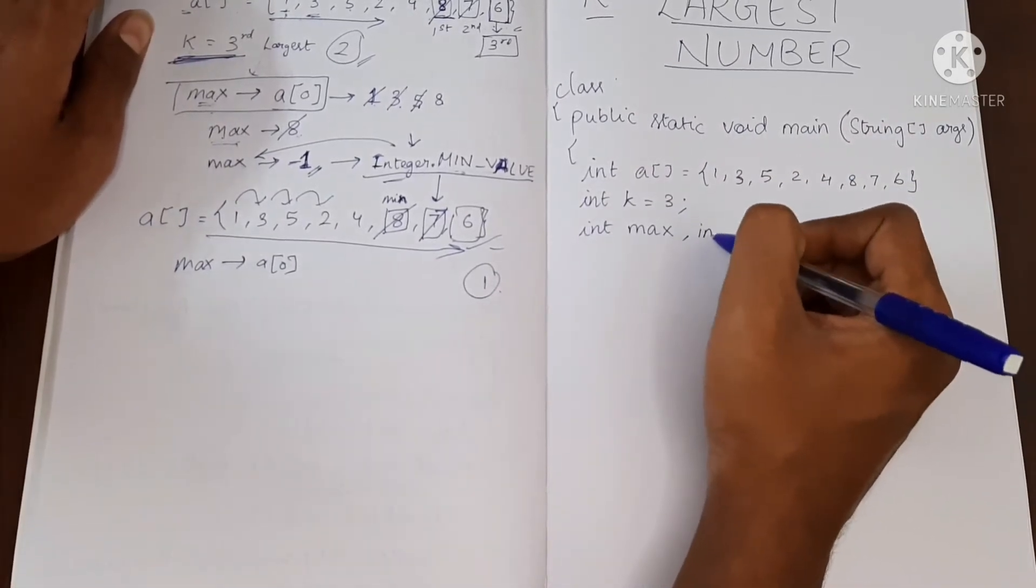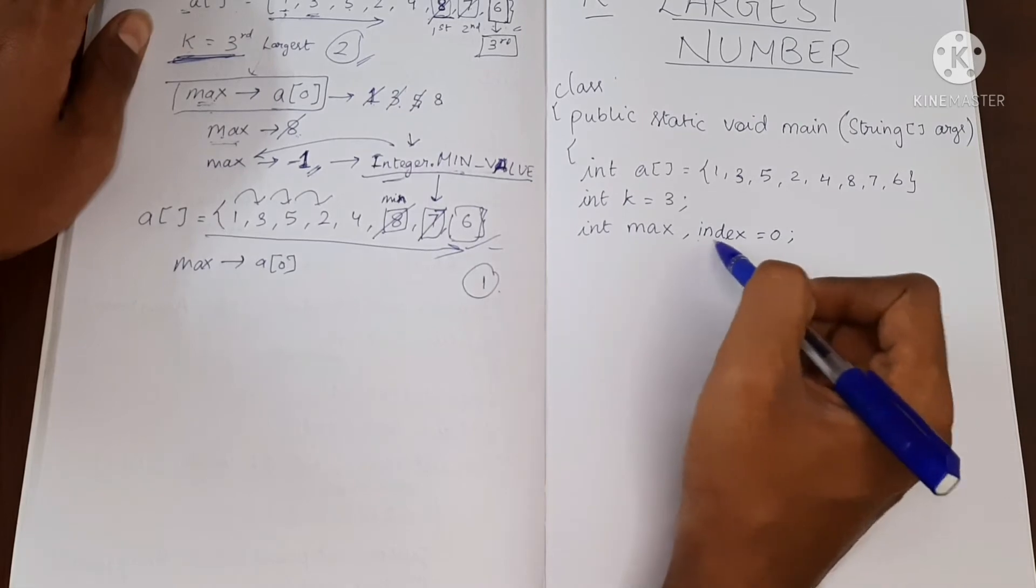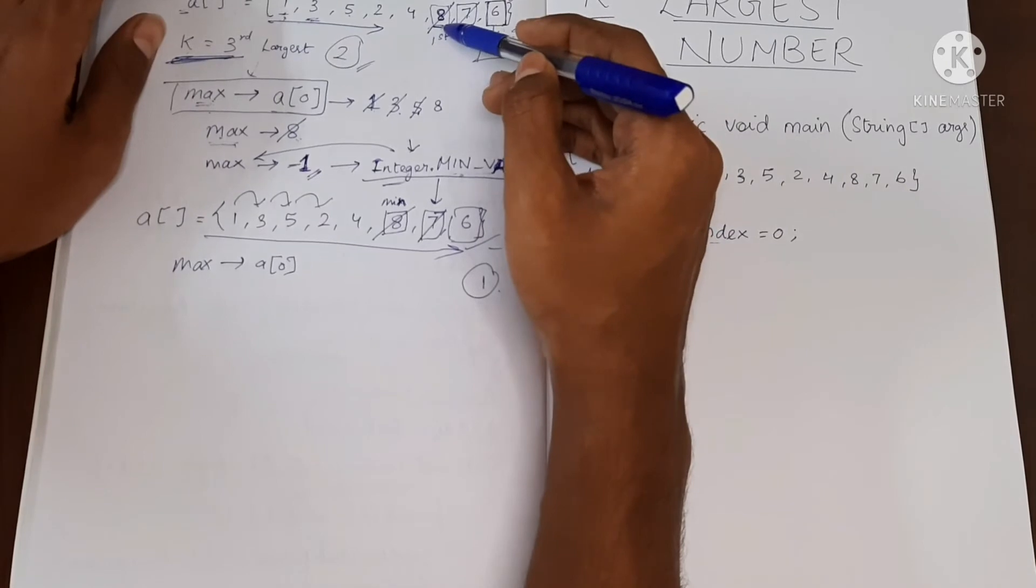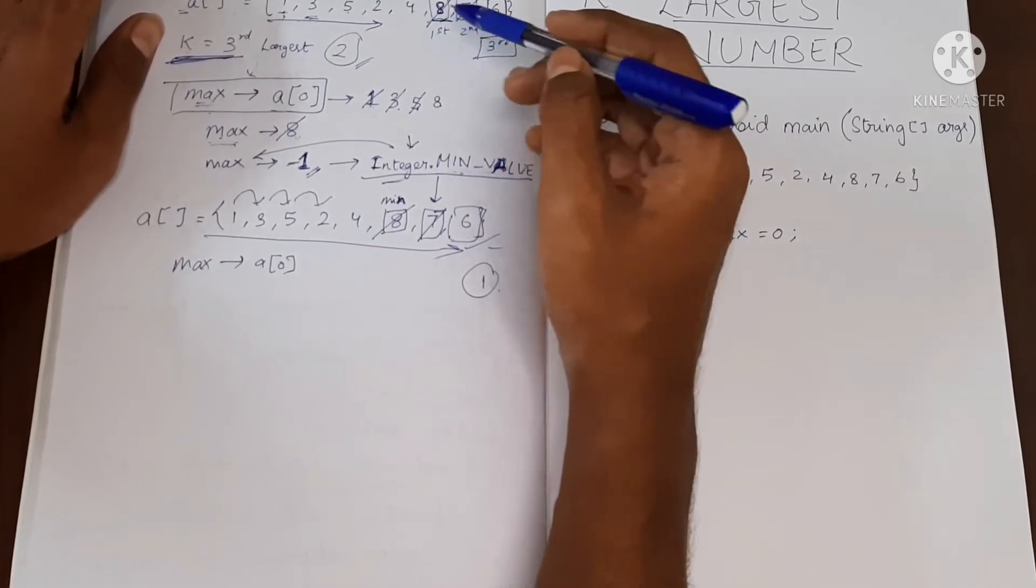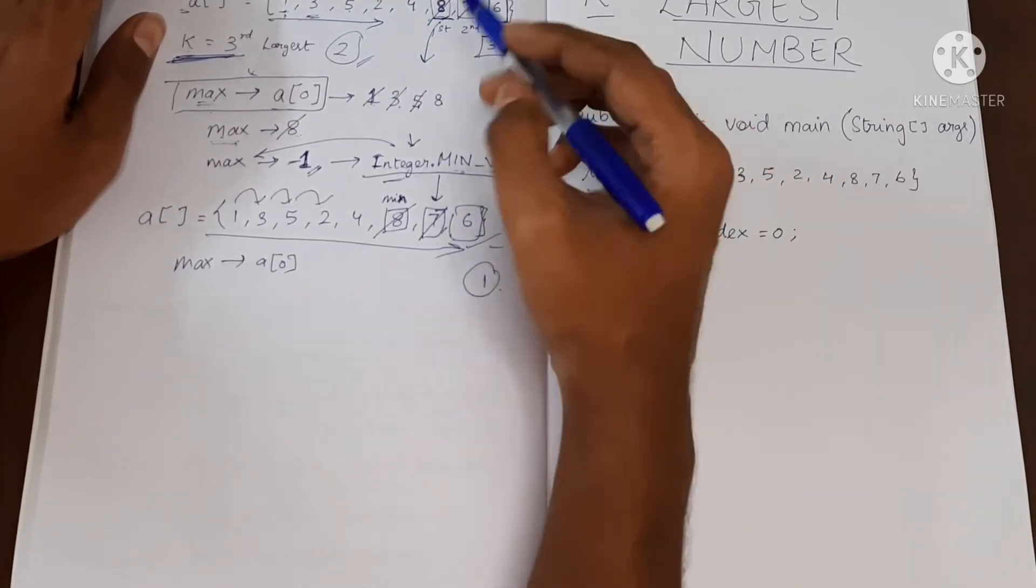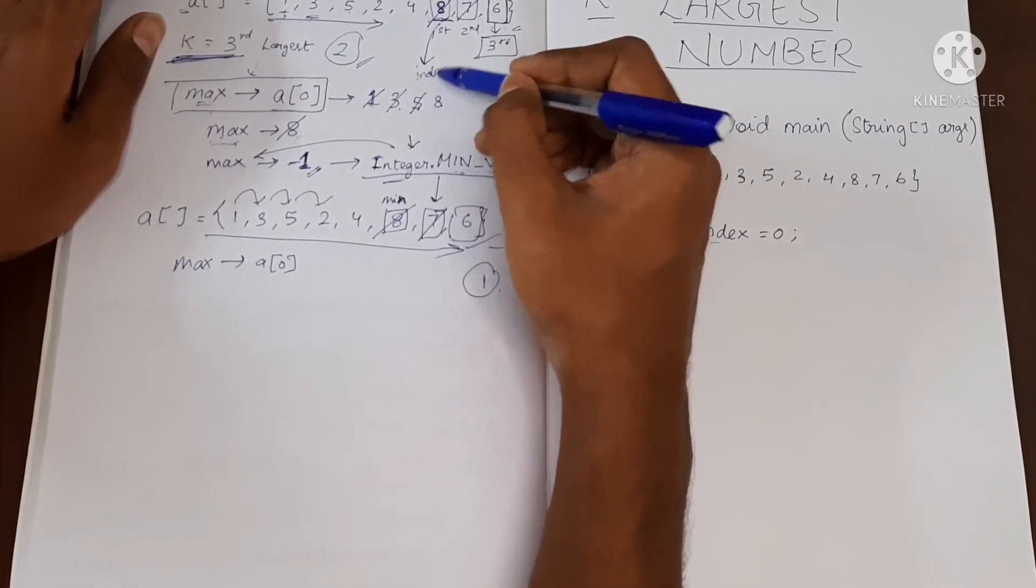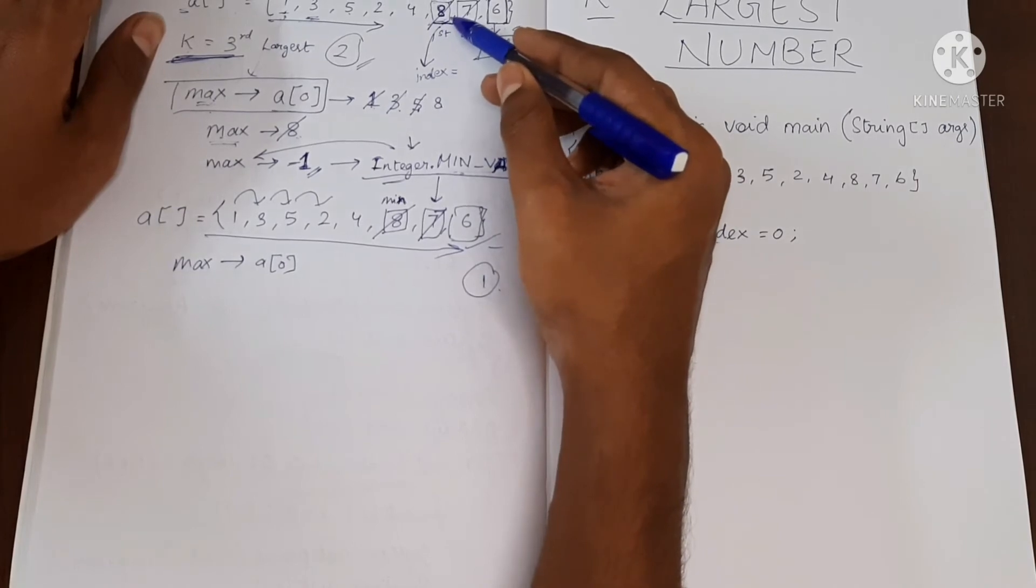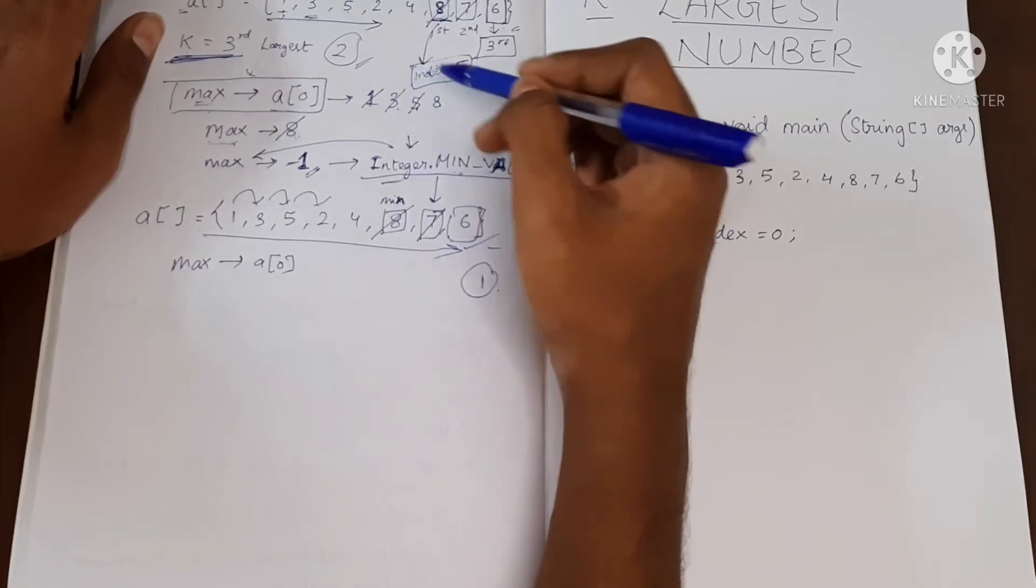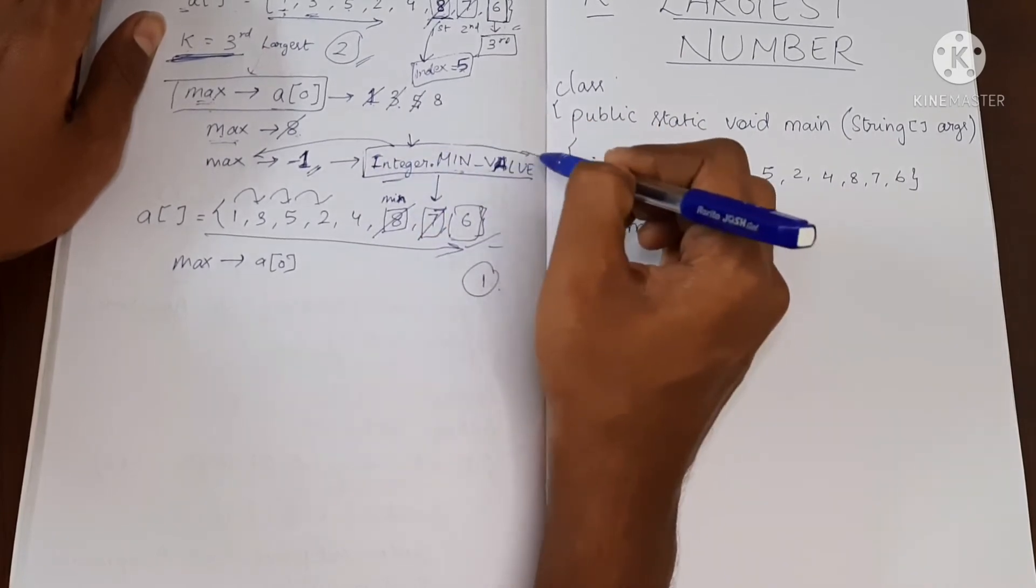I will create one more variable called index. In this index I'll store the index where I'm going to find the maximum value. So here I found 8 right. So what is the index location of this 8? It will be 0, 1, 2, 3, 4, 5. So in this variable index I'm going to store the index location where I'm finding the largest value. So using this index I will be able to modify this 8 into Integer.MIN_VALUE. I'll show it in the program.